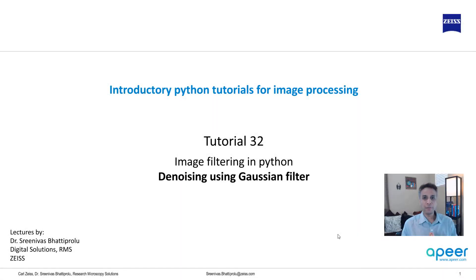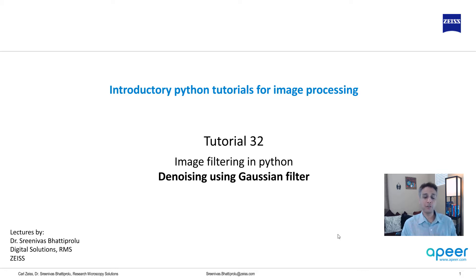Hi everyone, welcome to tutorial 32 of our introductory Python for image processing tutorial series. In this tutorial I'm going to talk about Gaussian filtering for denoising. This is a very common filter for denoising, though it does blur your images a little bit.